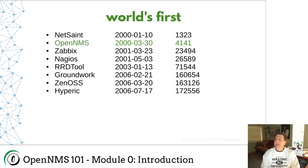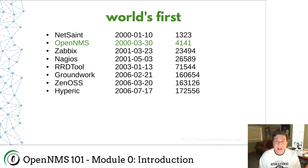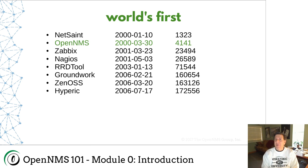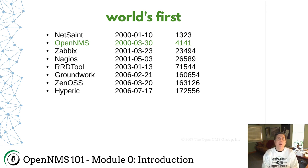World's first. Probably the grand old man of open source monitoring tools is something called Nagios. It actually started off life as NetSaint, and it started out in January of 2000. So we were registered on SourceForge in March of 2000 — we're contemporaries. NetSaint ran into a trademark issue, so they changed their name and that became Nagios. There are a couple of other tools from that era that are around. So when I say world's first, I basically mean we've been around a while.